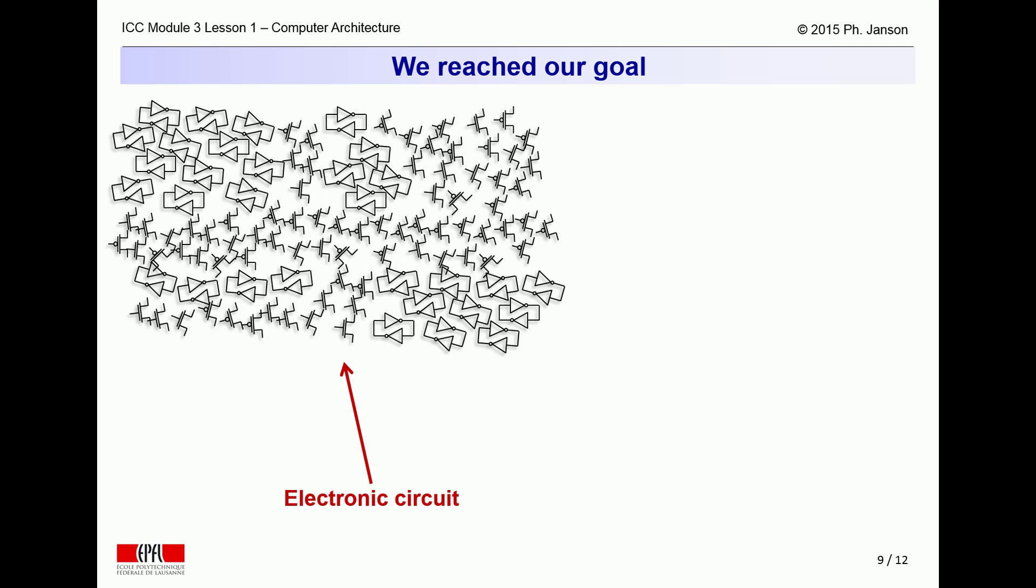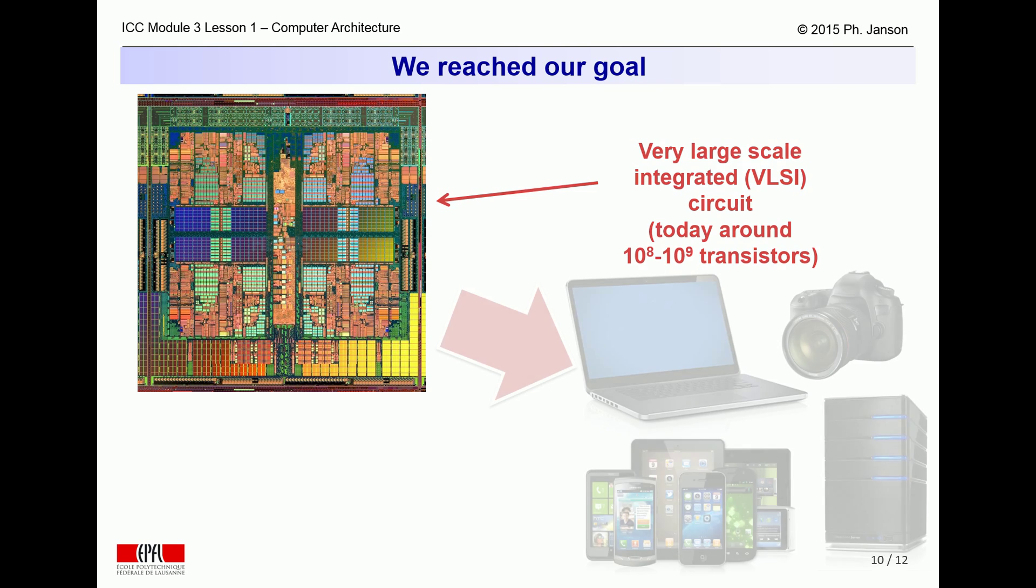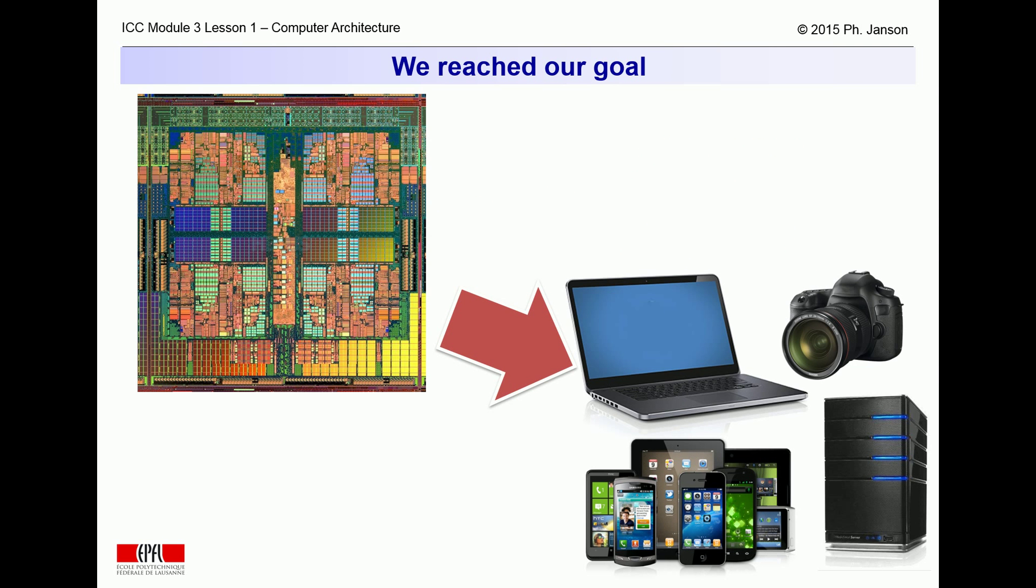And this computer architecture boils down to an ocean of transistors. In practice, this ocean is however well structured into VLSI circuits, including up to billions of transistors for the most powerful computer chips of today. Such chips, plus additional memory chips, I/O chips, keyboard, display, touch screen, camera, loudspeaker, microphone, network, disk and other peripheral device interfaces can all be built and assembled into computers and all forms of household appliances and industrial devices that are computer controlled.